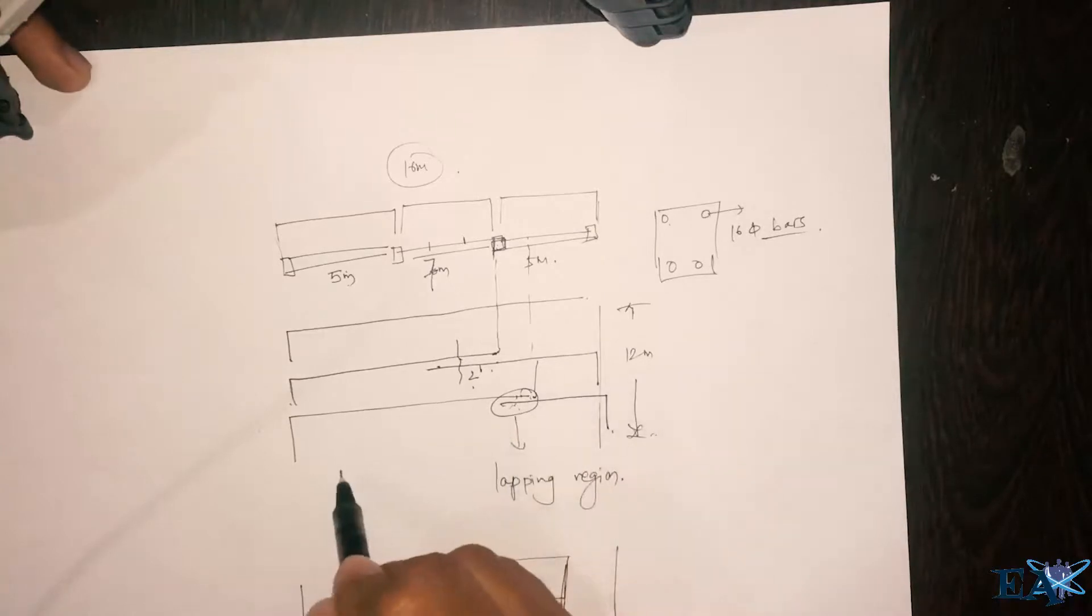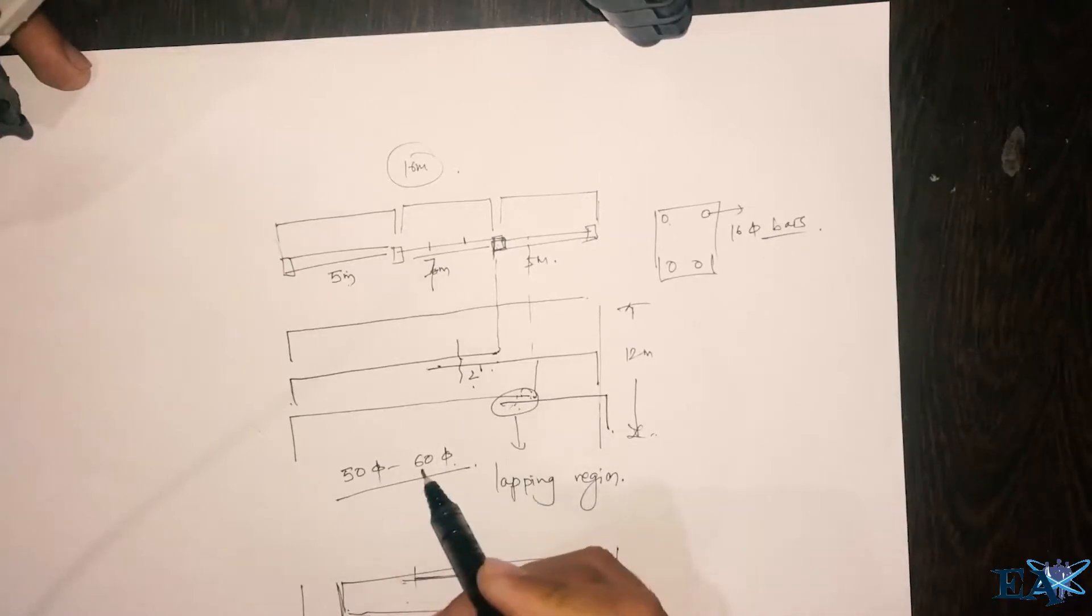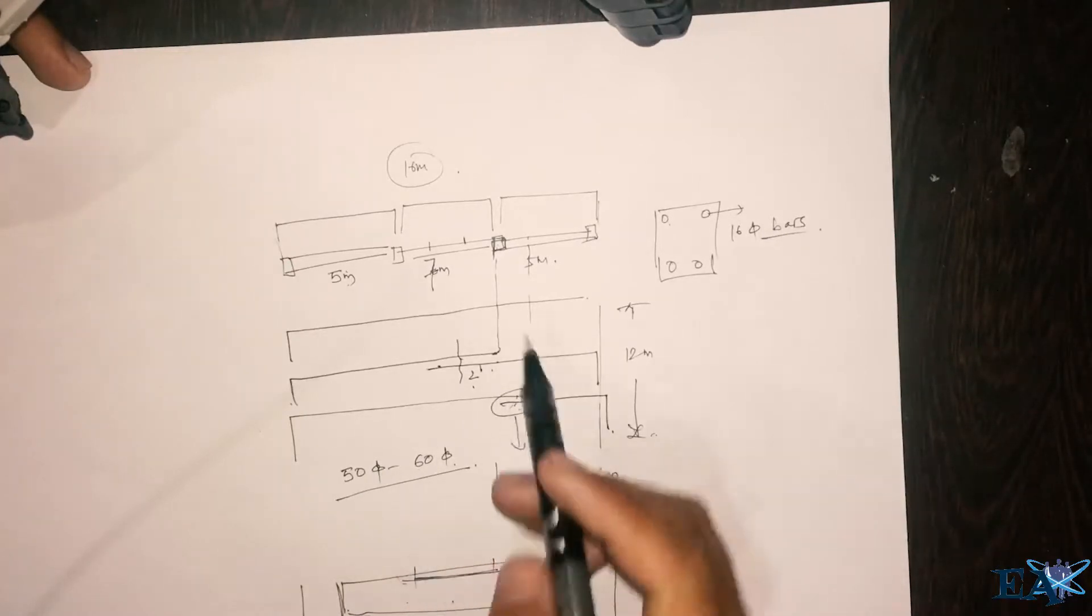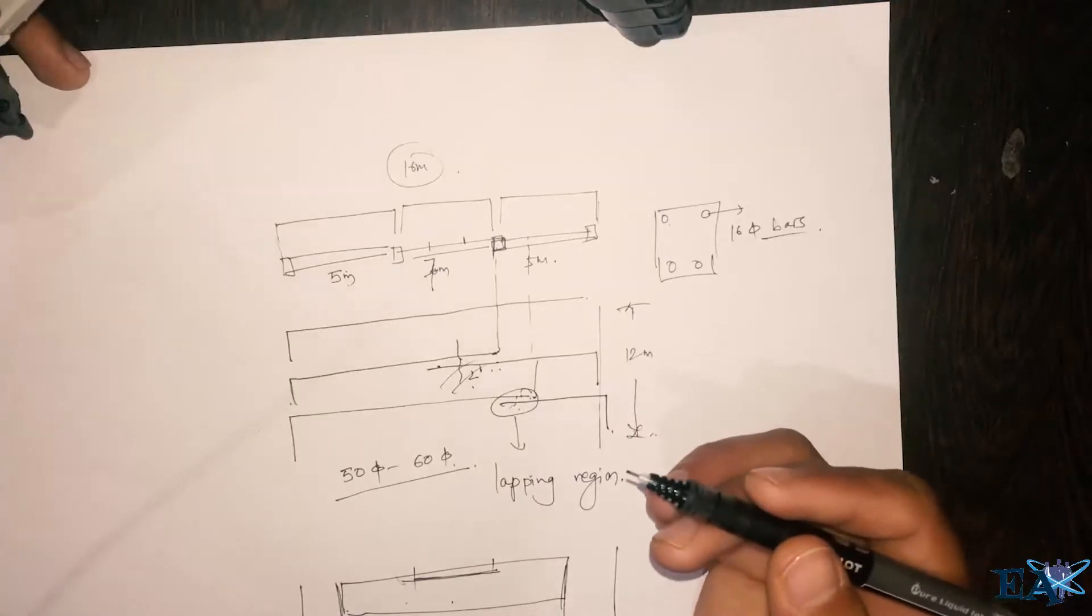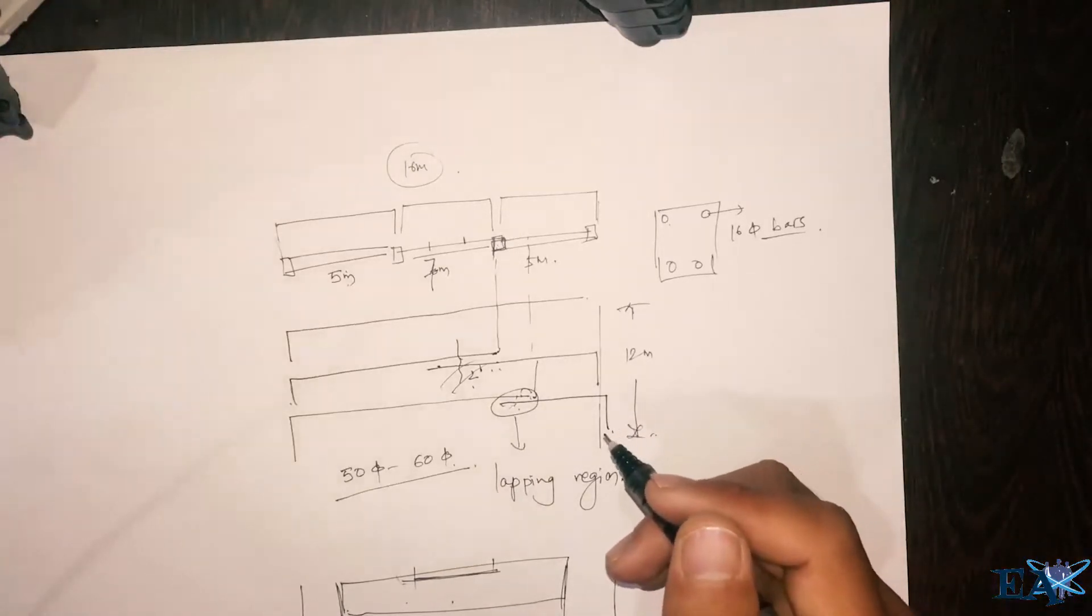It normally varies from 55 to 65, where φ is the diameter of the bar. So this is a short video on lapping of the bars. Hope this video was helpful. Thank you for watching, take care.